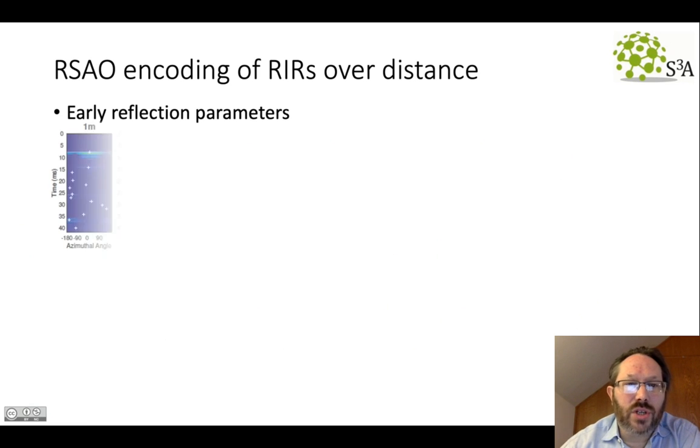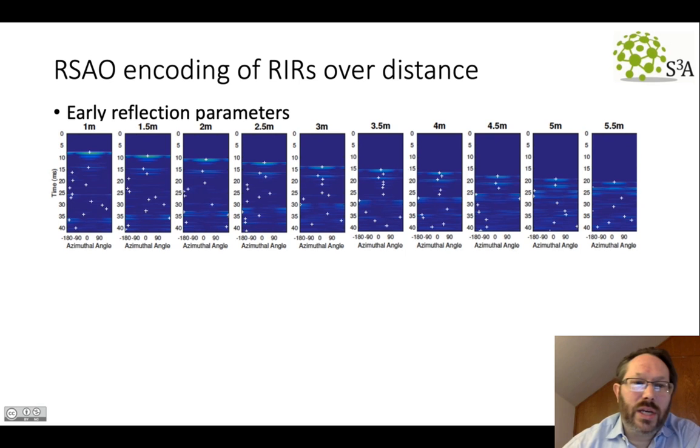Looking at some measurements across different distances, we can see initially how some of the early reflections are encoding information about distance. You can see, for example, the direct sound getting later and decaying just after it. This strong early reflection has a delay that is reducing over time, but also there's a back wall reflection, and there are other patterns in these early reflections that we wanted to capture as part of that information.